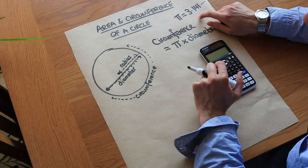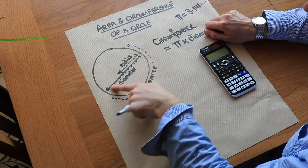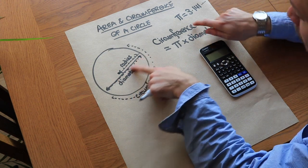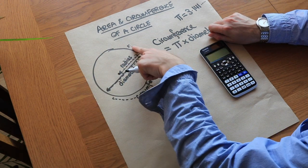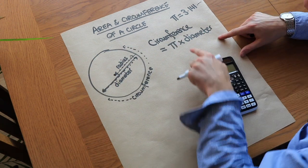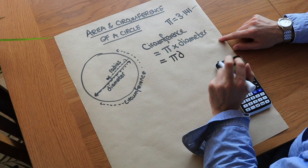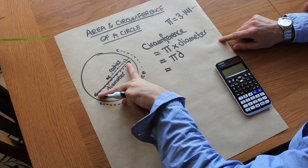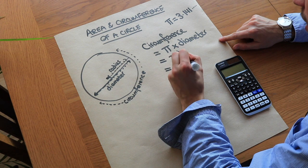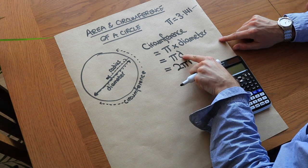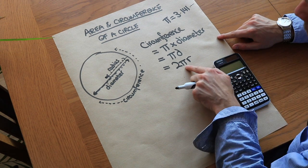So pi is basically how many times bigger the circumference is than the diameter — we need to go three and a bit lots of the diameter around to do one full rotation. If we use d to represent diameter, the circumference can be written as πd, meaning pi times the diameter. Because the diameter is twice as long as the radius, we have a second formula: 2πr, where I've just replaced d with 2r.